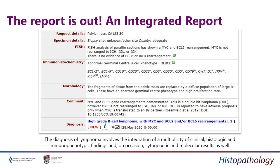It's called high-grade B-cell lymphoma with MYC and BCL2 and/or BCL6 rearrangements. By rearrangements we mean translocations, which is something you can only identify or detect by FISH. Even from the name you know this is an entity where you need an ancillary study — FISH in this case. Most of our cases today, especially neoplastic ones, don't rely solely on morphology for classification; sometimes we need more layers.